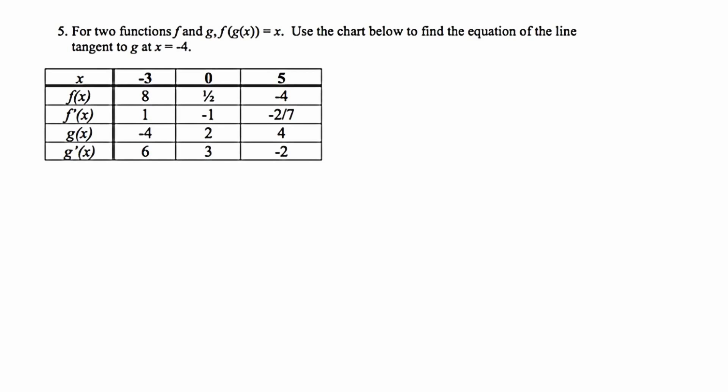The first thing I want to draw your attention to is the fact that f(g(x)) = x. We've seen this in several earlier examples and we know that this indicates that f and g are inverses. Now my objective overall in this problem is to write the equation of a tangent line. To write the equation of a tangent line, I need two things: I need a point and then I need a slope.